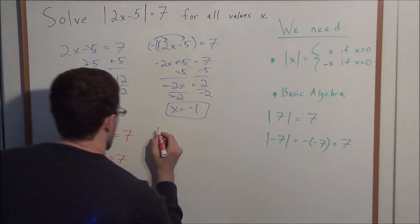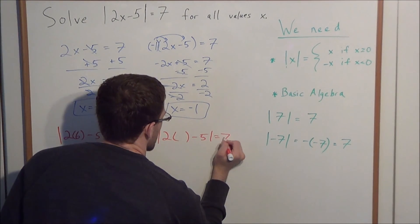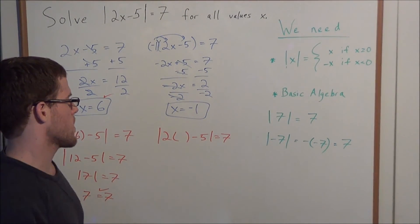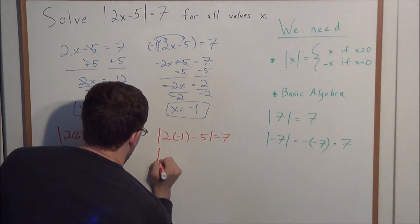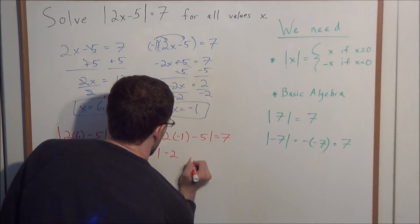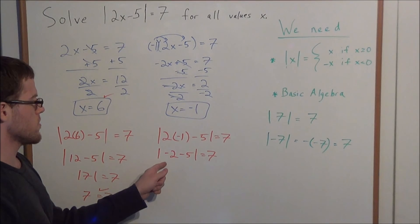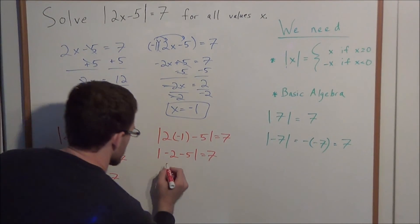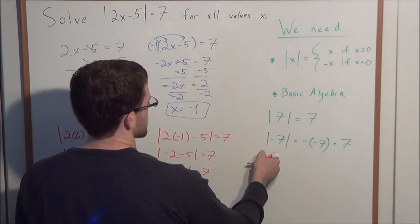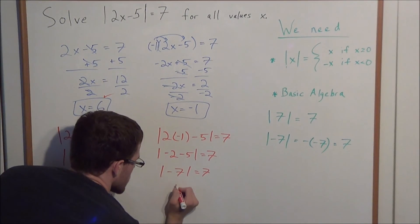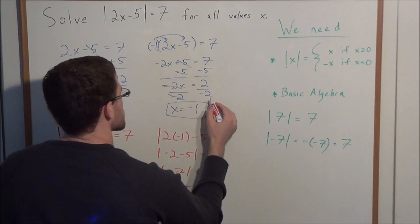So next we'll check x equals negative 1. So we're looking at 2 times x minus 5 equals positive 7. Absolute value of 2 times x minus 5 equals positive 7. And now we're evaluating this at negative 1. So we have 2 times negative 1 is negative 2, minus 5 equals 7. So now the absolute value of negative 2 minus 5. Well, this is the absolute value of negative 7 when we simplify. And what did we say before? Absolute value of negative 7, using the definition, told us that absolute value of negative 7 equals 7. So we have 7 equals 7, and this solution also checks.